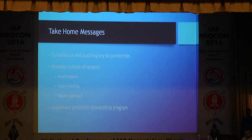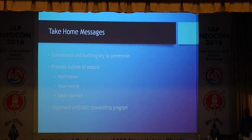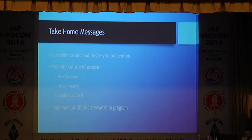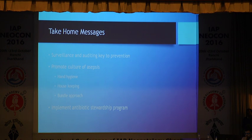To summarize: surveillance and auditing are the key to prevention. Unless we have surveillance and know the rates of sepsis, we cannot prevent sepsis. Promote a culture of asepsis by promoting hand hygiene, ensuring proper housekeeping, and applying a bundle approach for three things: peripheral cannulas, central lines, and ventilator-associated pneumonia. Lastly, it is very important to implement an antibiotic stewardship program, and this is one intervention which can reduce the chance of fungal sepsis.